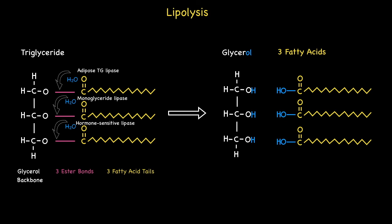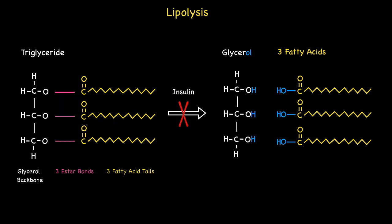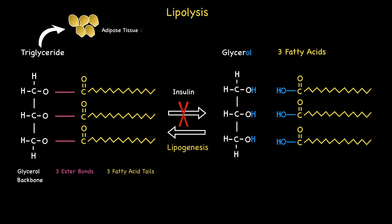There are a number of hormones which trigger lipolysis, the most significant being adrenaline, followed by cortisol and glucagon. While these hormones facilitate lipolysis, insulin has the opposite effect. It is frequently described as the most potent anti-lipolytic agent in the body, because it triggers the opposite process to lipolysis, termed lipogenesis — the creation of fats such as triglycerides and their subsequent storage in cells found in adipose tissue.